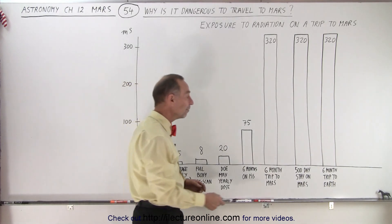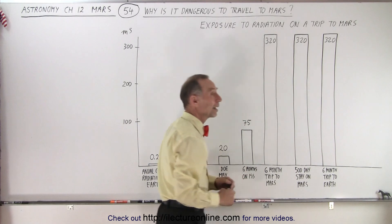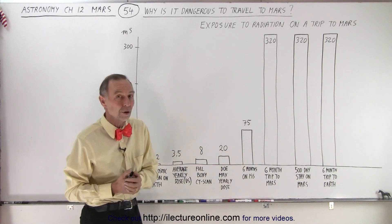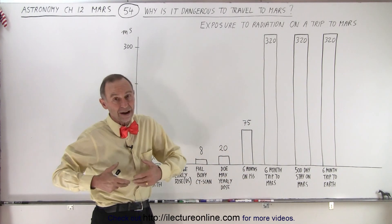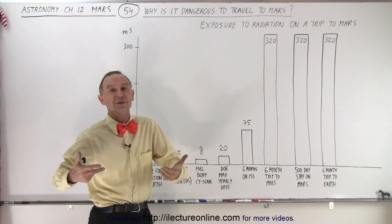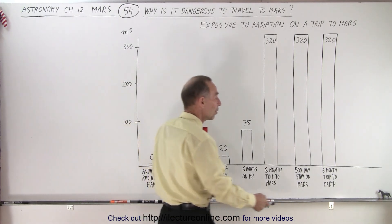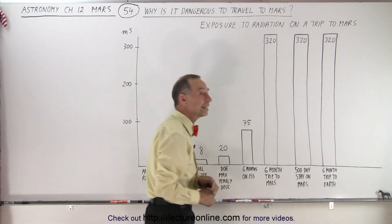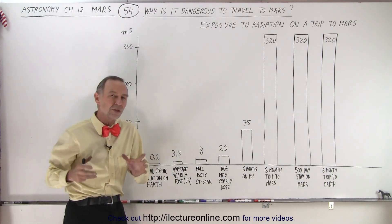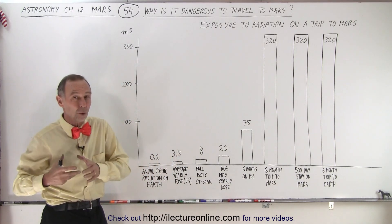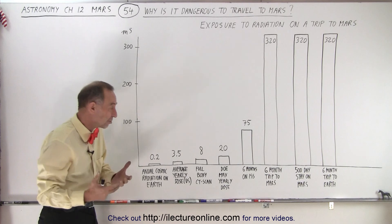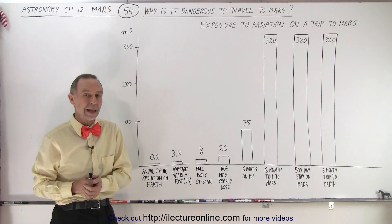Then spending 500 days on the surface of Mars, you'll receive about another 320 or so millisieverts. And then if you have the technology in the spaceship to bring you back to the Earth, that trip will add another 320 millisieverts. Close to 1,000 millisieverts, one whole sievert of radiation on a trip to Mars and back.